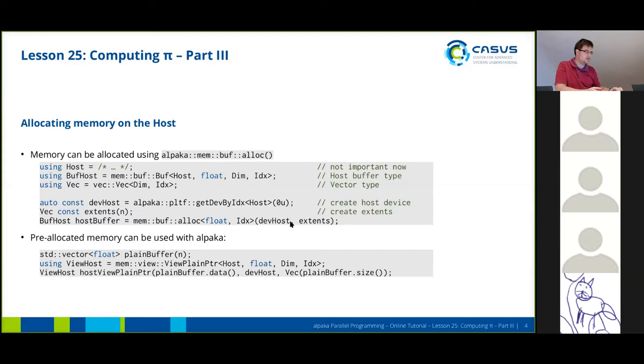We actually need to acquire a host device for this part. This device basically simulates an actual physical device that is specific to the host. We need to define the extent of our buffers and then we can use the membuf-alloc function to actually allocate our buffer.